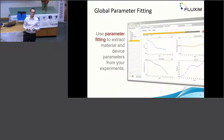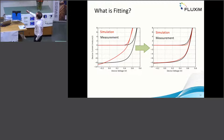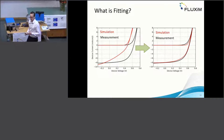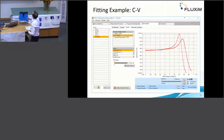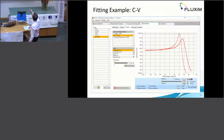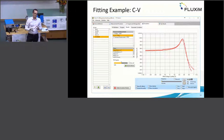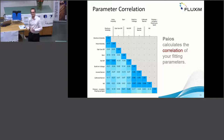Simplified: you start with an IV curve in light and dark, an initial simulation that doesn't match, then define parameters to tweak, and half an hour later you have a nice match. For example, a capacitance-voltage curve of an organic solar cell with global fitting — you see where it starts and what was reached. Before in my talk I showed a correlation matrix, which gives information about how unique your fit is. This is automatically calculated in PyOS, so you can see if certain parameters are correlated and thus less trustworthy.